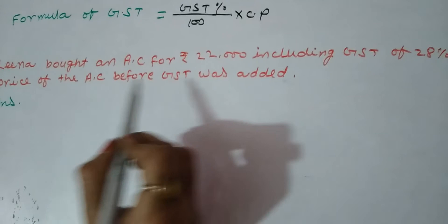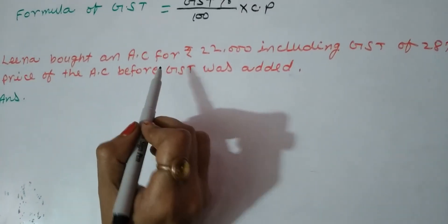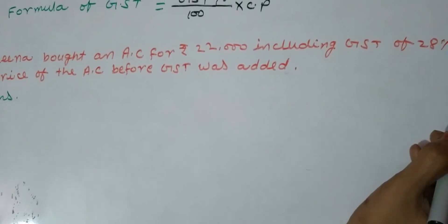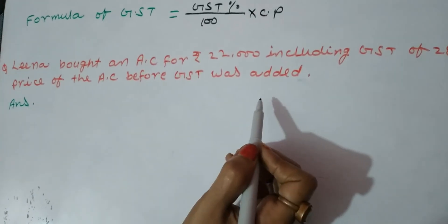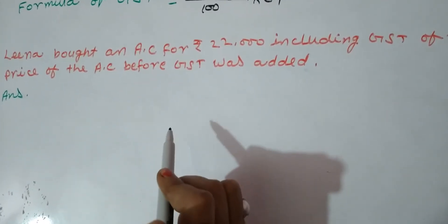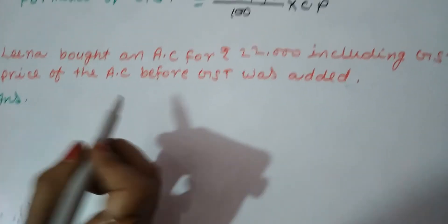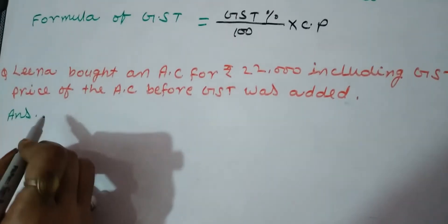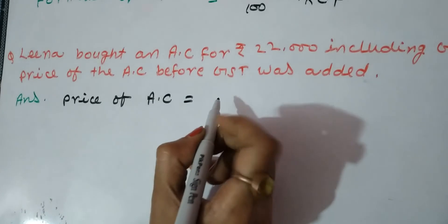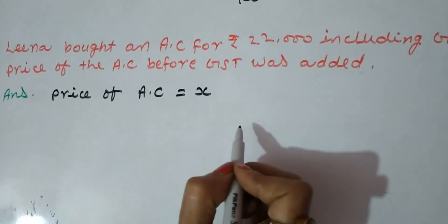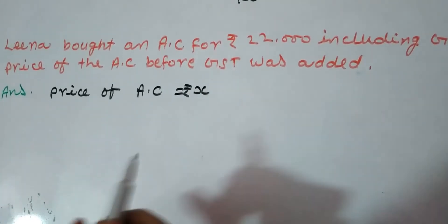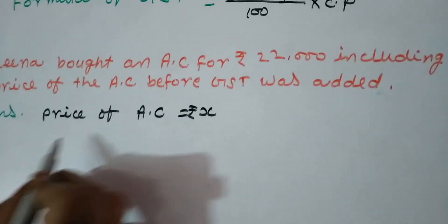To understand this formula, here is a question: Lina bought an AC priced at ₹22,000 which included 28% GST. We need to find the price of the AC before GST was added — i.e., the original cost price before GST was applied. Let's write what is given. The price of the AC is unknown, so we assume it as X rupees, since that is what we need to find.